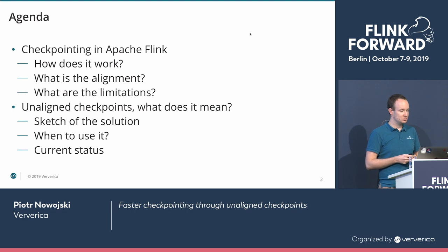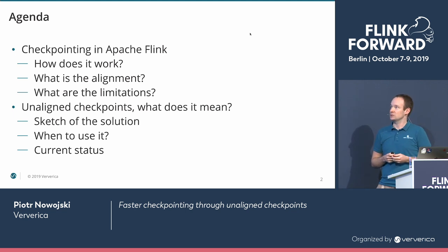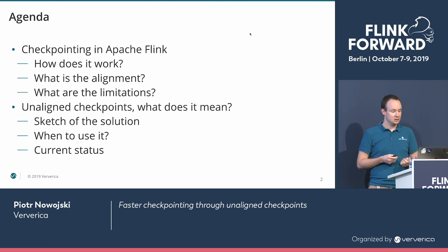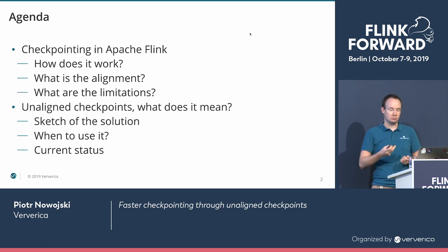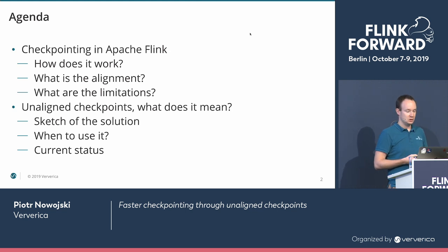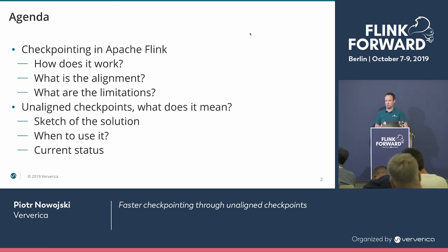Before we get to it, I would like to have some recap of how checkpointing in Apache Flink works currently, what is the alignment, and what are the limitations of it. Then we will move on to unaligned checkpoints: what does it mean, how do they work, when to use them, what are the limitations, and what's the current status of the unaligned checkpoints proposal.